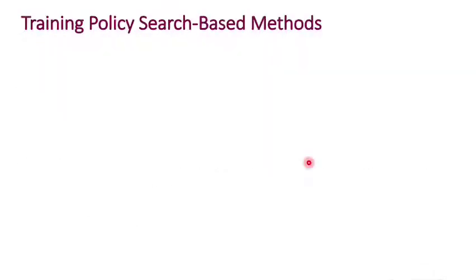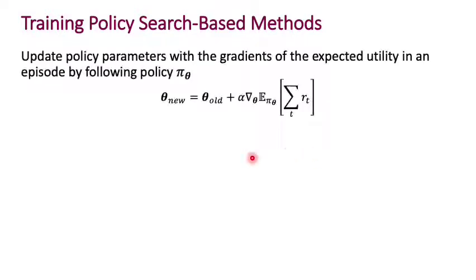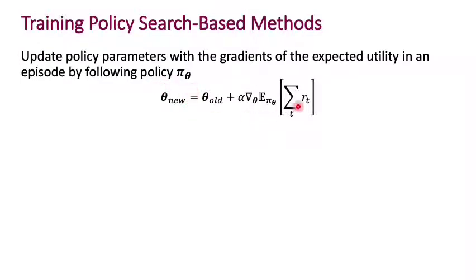It would be great if we could train our policies with gradient descent, just like we've been training our supervised and unsupervised learning algorithms. We could take the parameters of the policy at the previous time step, add a learning rate times a gradient of the thing we'd like to optimize — in this case the expected utility. Taking the gradient with respect to the parameters of the expected utility gives us the direction to move in order to set the new parameters theta_new such that that value increases.